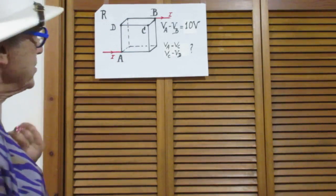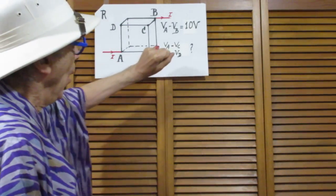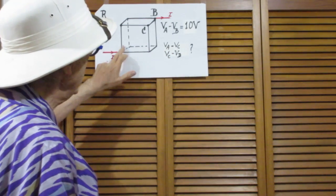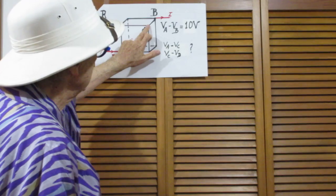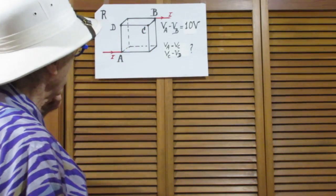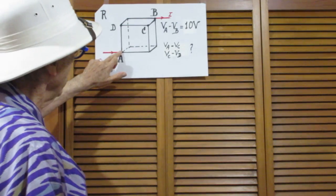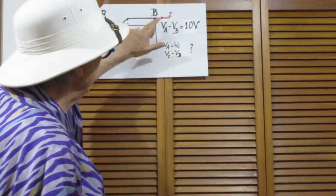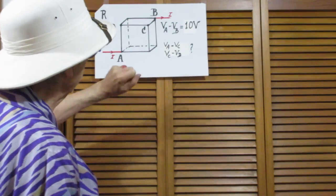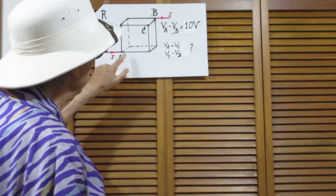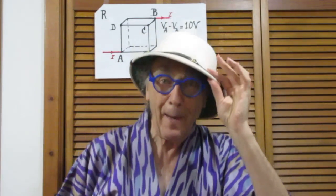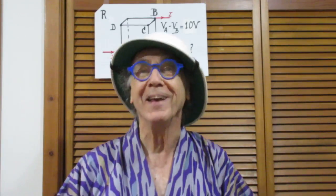My question now is what now is the potential difference between A and C, and between C and D? So the potential difference between A and B is 10 volts. What now is the potential difference between A and C, and between C and D? It looks perhaps simpler than it really is.